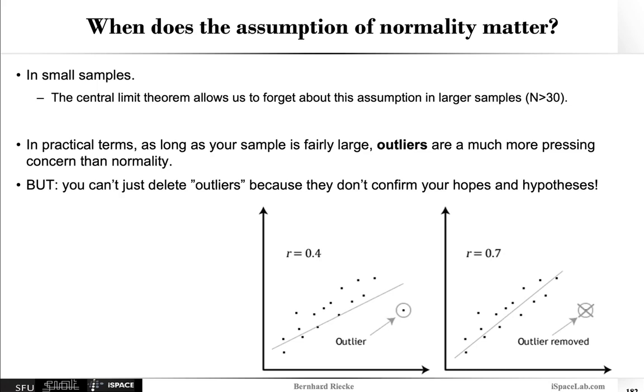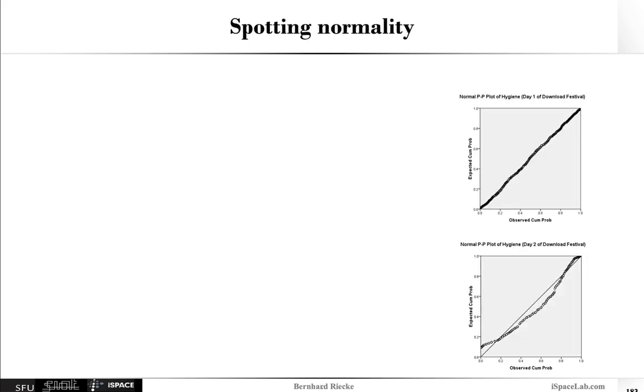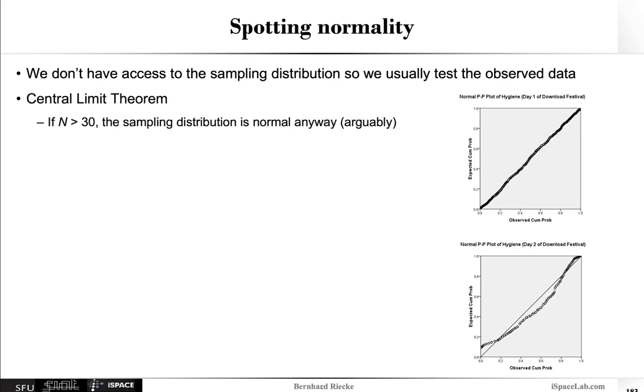So how do you actually spot normality? So there's various ways you can do this. Typically we don't really have access to the actual sampling distribution so we usually just test on the observed data because that's typically all we can do. And keep in mind the central limit theorem so if you have more than 30 or so participants the sampling distribution should arguably be fairly normal anyways. One of the things you can do is basically look at graphical displays like the P-P plot or Q-Q plot and see whether they align with the diagonal here. You can of course also look at the histogram and normal fit and then you can also just run a simple test to see if that works. That's fairly easy in most software.